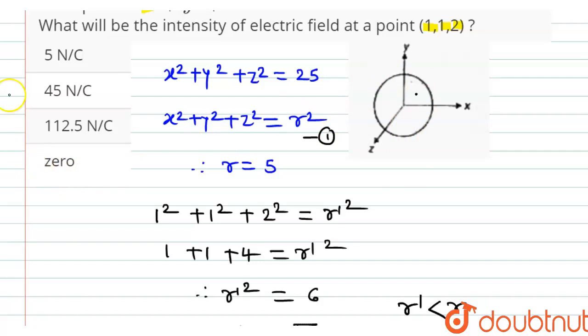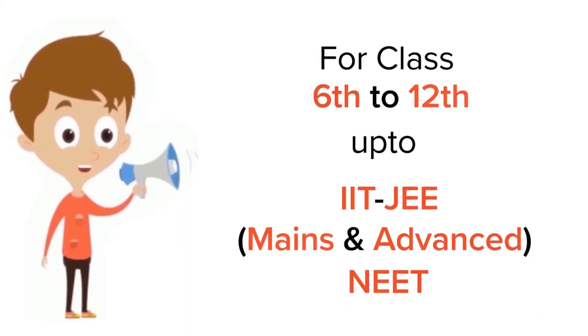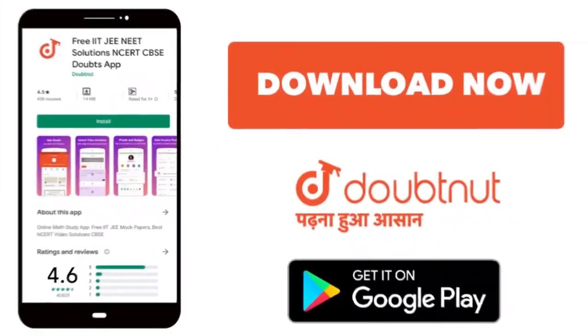So, here correct answer for our question is option 4, that is 0. Thank you. For class 6 to 12, IIT and NEET level, trusted by more than 5 crore students. Download Doubtnet app today.